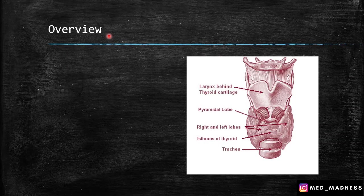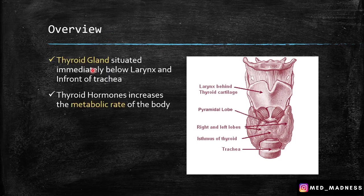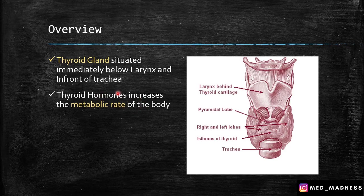Hi, this is Dr. Ram from MedManus. This week's video is about thyroid histology. I'm going to give you some overview and then go through this slide. The thyroid gland is situated immediately below the larynx and in front of the trachea. The thyroid hormones increase the metabolic rate of the body — this is the important function of thyroid hormones.